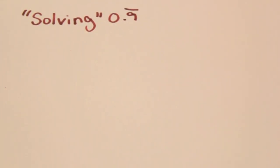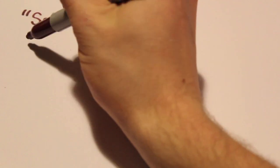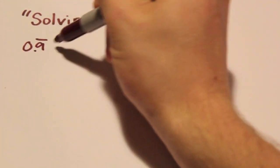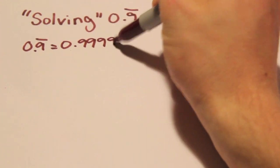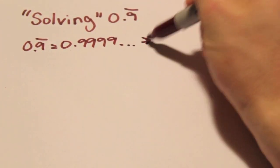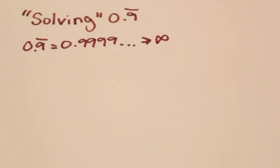Solving for 0.9 repeated. 0.9 repeated, or 0.999999 all the way to infinity, is a number that's actually a lot simpler than it first appears.